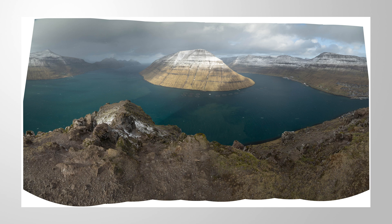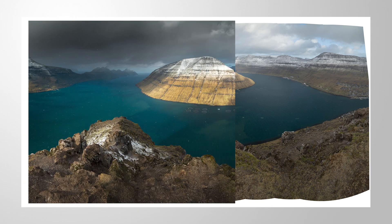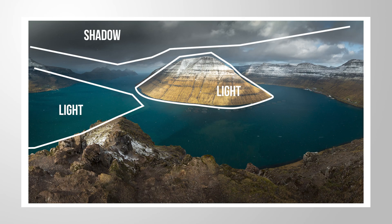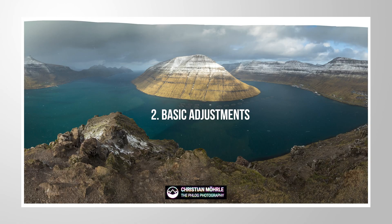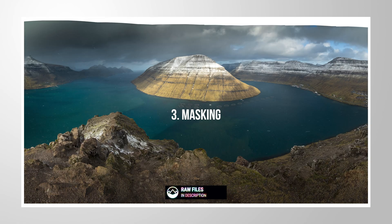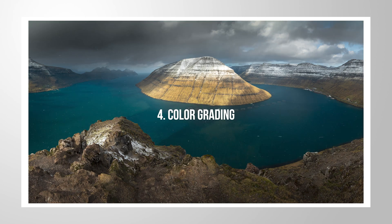Let me show you how we can make our images look more 3D by taking advantage of light and shadows. First, we're going to merge the panoramic image, then apply some basic adjustments, followed by the most important part of this 3D effect — the masking — and a little bit of color grading. Finally, we will finish things up in Photoshop. If you want to follow along, feel free to download the raw files from the link in the description. Now let's begin.